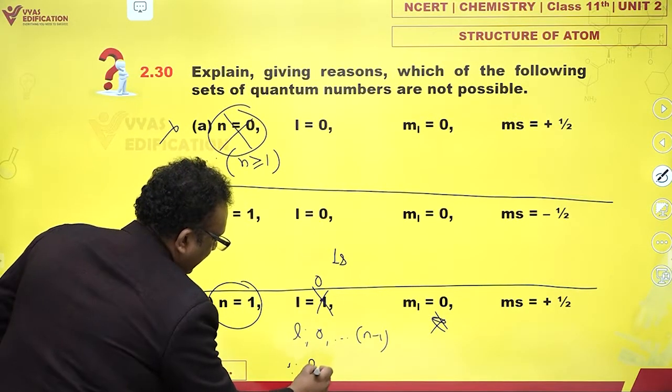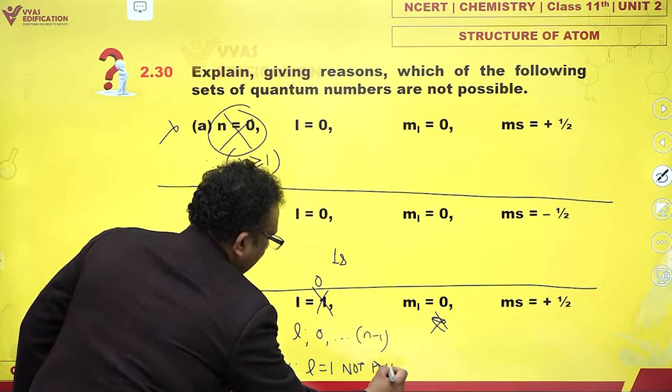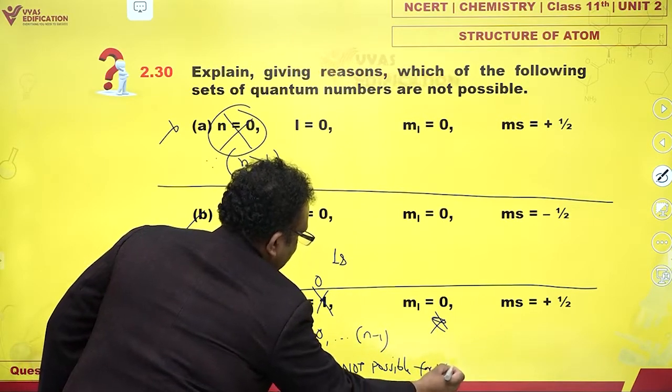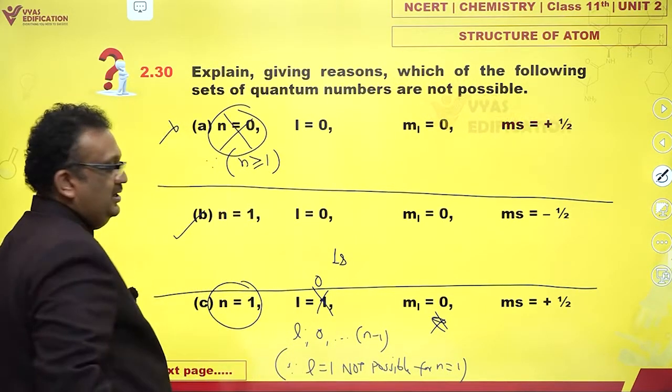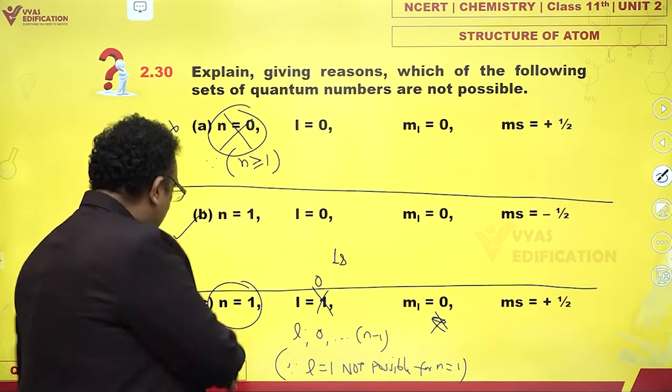Since l equals 1 is not possible for first shell n equals 1, that is the reason for not having c. C is also a wrong option.